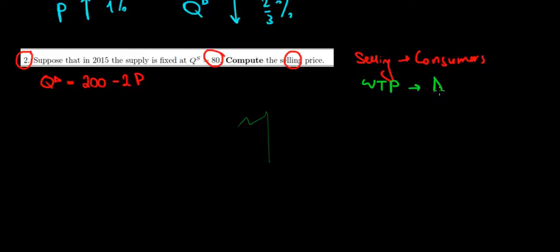We have to go to the demand function and see what is going to be the price paid by the consumers for 80 units supplied.